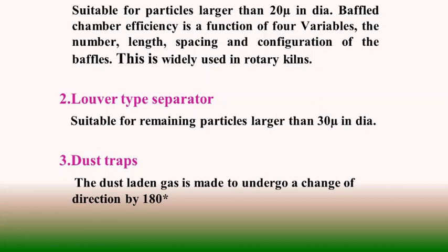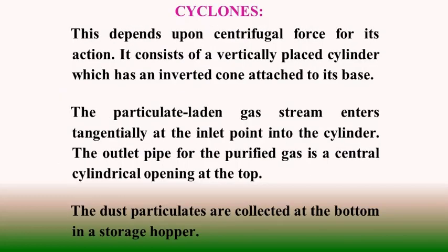Louver type separators are used for larger particles — 30 microns and above. In some places, dust traps are used, which separate particulates from gas by a 180-degree reversal of the flow passage, thereby separating the dust medium from the gas medium.